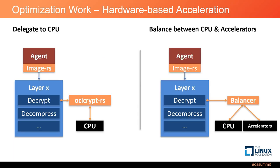This page shows the other part of our work: balancing decryption procedures between CPU and hardware accelerators. The left diagram shows that currently all decryption procedures are carried by the Rust crate ocicrypt-rs, dedicating all decryption to the CPU, which makes the CPU busy and may occupy time slices of other tasks. The right diagram shows our design: a balancer that delegates decryption procedures to CPU or accelerators according to the attributes of the tasks. The accelerators can share the pressure with the CPU and, furthermore, handle some decryption tasks faster than the CPU, decreasing CPU workload and accelerating decryption.